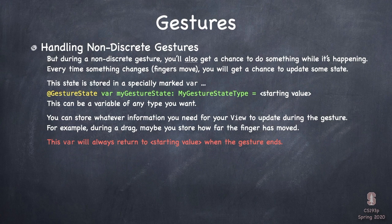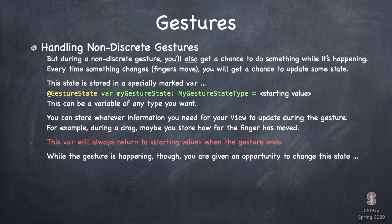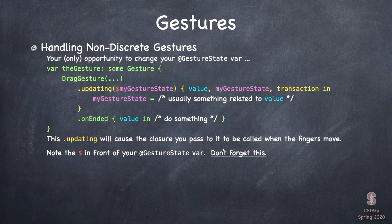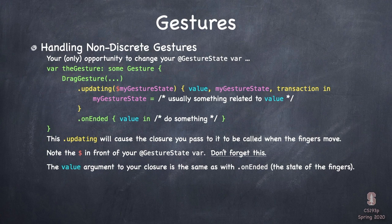While the gesture is going on, you update your `@GestureState` to reflect what's happening. As soon as the fingers go up and it ends, this resets back to the starting value. So you have to understand this gesture state is only the state while the gesture is active — that's why I put this in red. To change this state, just like you have `.onEnded`, you have another function called `.updating` on your drag gesture. The `.updating` function takes two arguments — the first in parentheses is your gesture state var, passed with a dollar sign prefix.